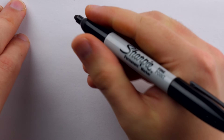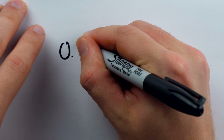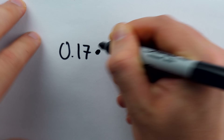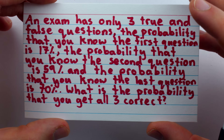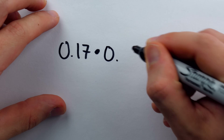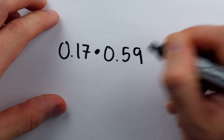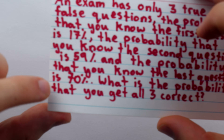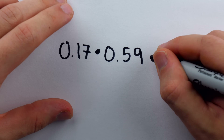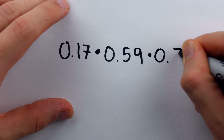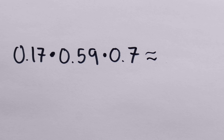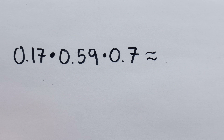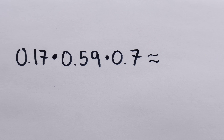Then multiply that by the probability we get the second question correct, which is 59%, and then multiply by the probability we get the third question correct, which is 70%, or 0.7. If events are independent of each other — which it seems we're supposed to assume here — then their probabilities can just be multiplied together to find how likely it is that they all occur.